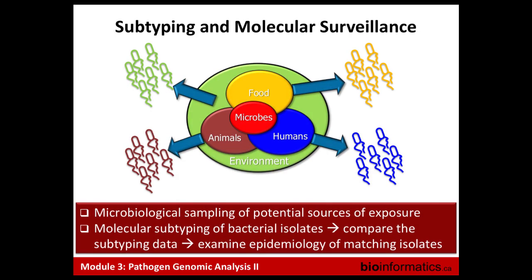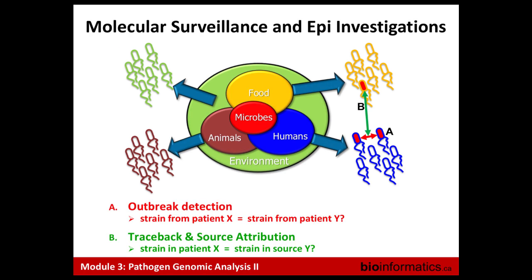When we use genotyping for surveillance programs, we can look at the potential source of exposure and build a tree to understand the lineage of strains and their relevance to human health. Two major parts of that are source attribution — figuring out where a particular strain came from — and also identifying when outbreaks have occurred.